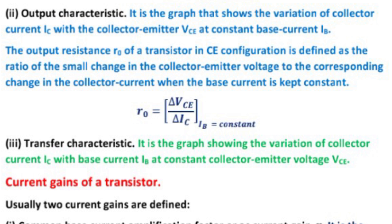Third is transfer characteristic: the graph showing the variation of collector current IC with the base current IB at constant collector emitter voltage VCE.